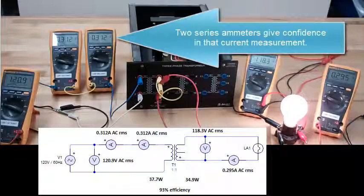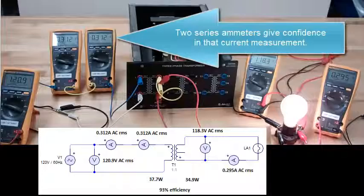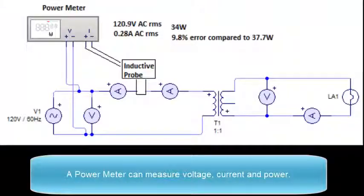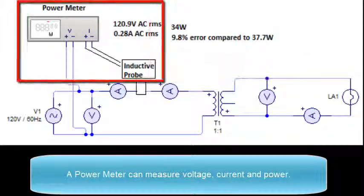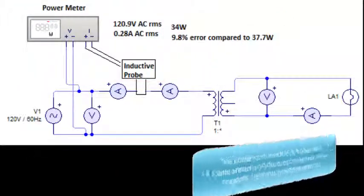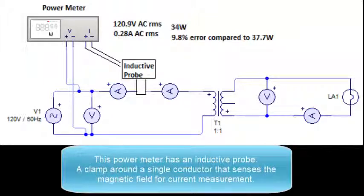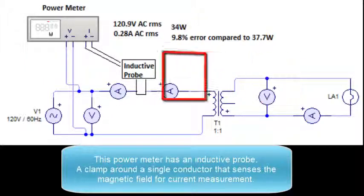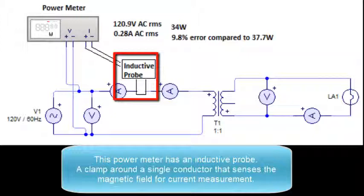The two series ammeters give confidence in the current measurement. A power meter can also measure voltage, current, and power. This power meter has an inductive probe. That's a clamp around a single conductor that senses the magnetic field for current measurement.